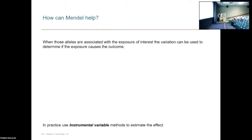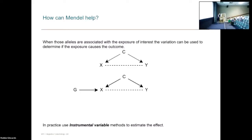When those alleles are associated with traits — as we just heard about from the talk on finding small variations associated with traits in large GWAS — we can use that variation to help us understand whether our exposure, say BMI, actually causes the outcome or not. We've got our X and Y that are possibly confounded or possibly causal, and we can take the genetic variants associated with X and use them to obtain a value of the exposure that is independent of that confounding, which can then be used to estimate a causal effect.